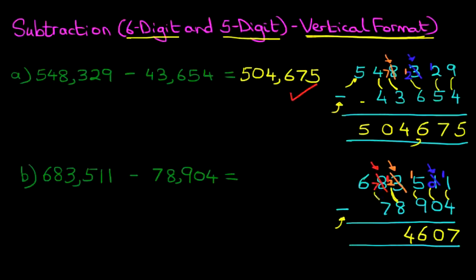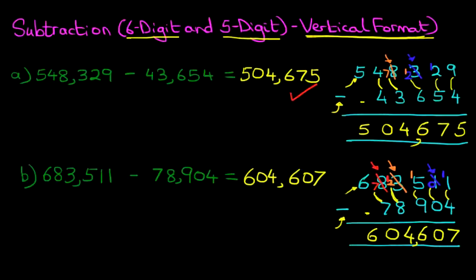We're on to the ten thousands: 7 minus 7. That's easy — that's a 0. And lastly, we've got 6 minus 0. The answer is 6. And that is our answer: it is 604,607. And for that, we get a nice big tick. That is how we subtract a 6-digit number and a 5-digit number using the vertical format.